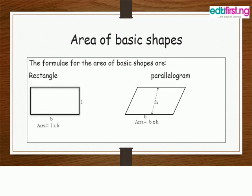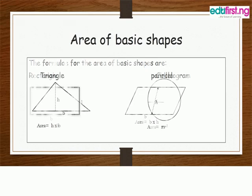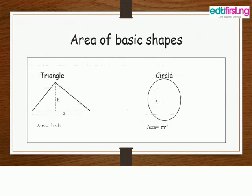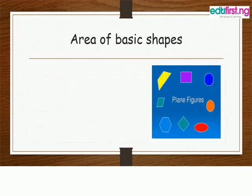The formula for the area of basic shapes: triangles and rectangle. Area of rectangle is length times breadth. Area of parallelogram is breadth times height.